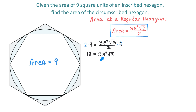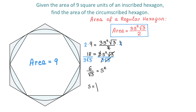To isolate s squared, we divide both sides by 3 times square root of 3. On the left side, 18 divided by 3 gives 6 over square root of 3. On the right side, 3 and square root of 3 cancel, leaving s squared. To find s, we take the square root of the left side, so s equals square root of 6 over square root of 3. We have now found one side of the inscribed hexagon.